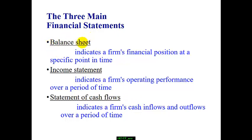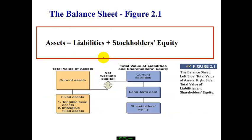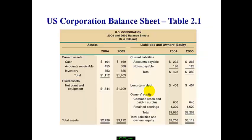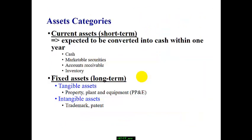Financial statements include the usual balance sheet, income statement, and statement of cash flow. The famous balance sheet identity equation: assets equal to liabilities and stockholders' equity. Depending on short term versus long term, we have current assets and fixed assets, current liabilities, and long-term debt. Here is a sample balance sheet and sample income statement.